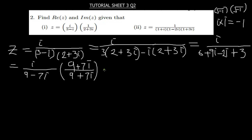So when you multiply, you get: 9 times i gives 9i on top. Then i times 7i — remember i times i gives negative 1 — so times 7 gives negative 7. So the numerator becomes 9i minus 7. Moving to the denominator, this is the difference of two squares: 9 squared minus (7i) squared.